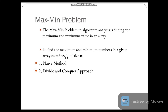The Max-Min Problem in algorithm analysis is finding the maximum and minimum value in a given array. To find the maximum and minimum number in a given array of size n, we can use two methods: the naïve method and the divide and conquer approach. We will see them one by one.